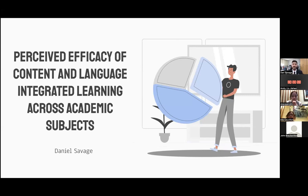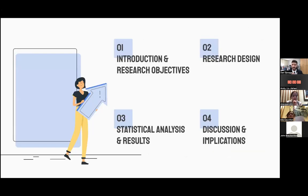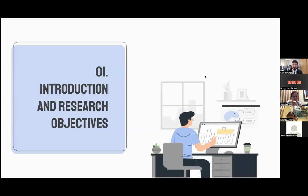I've been teaching social studies mostly to students whose second language is English — so they're learning through English, but learning a variety of different subjects, including social studies and others. I did some research on perceived efficacy of this approach to learning different subjects through English. I'll explain a bit about my project, and I hope this is helpful and interesting for you. I'll go through introduction and research objectives, design, statistical analysis and results, and discussion. I'll try to go quickly enough that we have time for questions at the end.